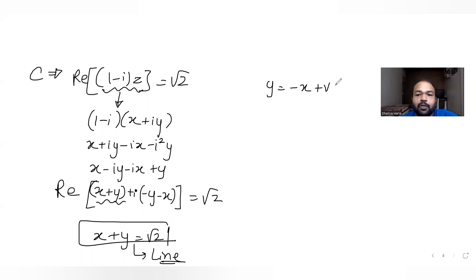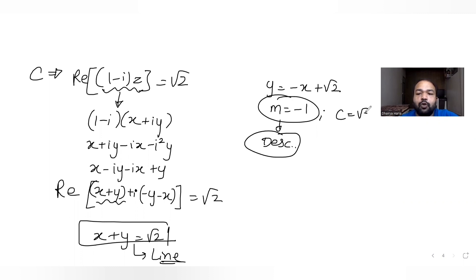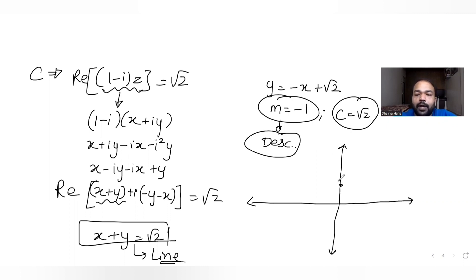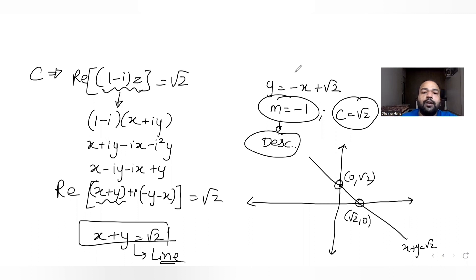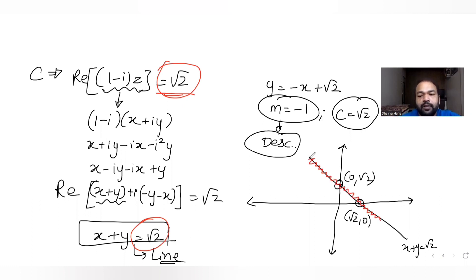The equation x + y = root 2 can be written as y = minus x plus root 2. The slope is minus 1, giving a descending line, and the y-intercept is root 2. This line intersects the y-axis at (0, root 2) and the x-axis at (root 2, 0). Since the condition is equal to root 2, all points on this line belong to region C.